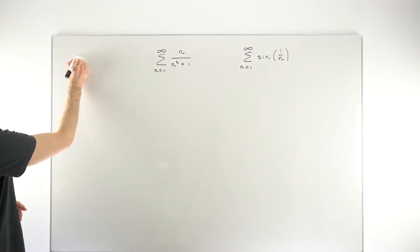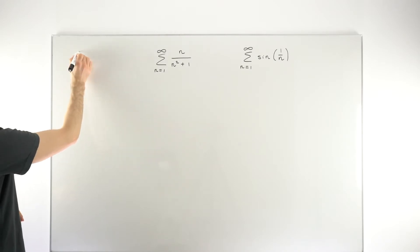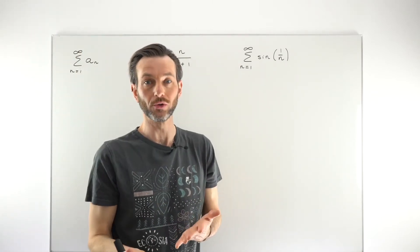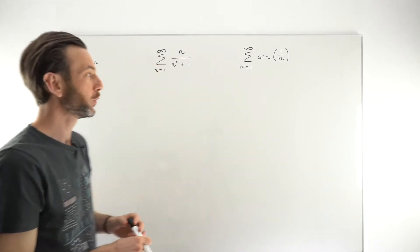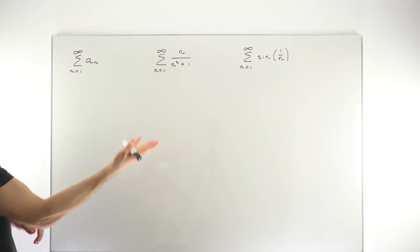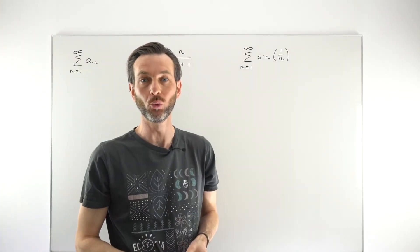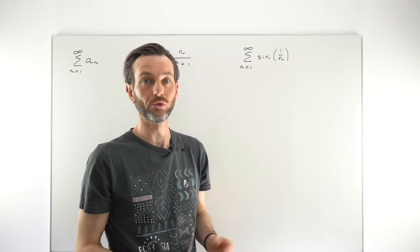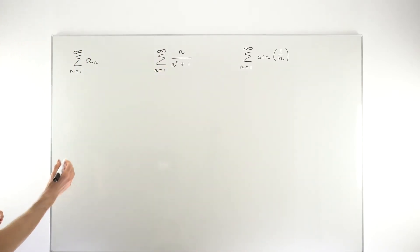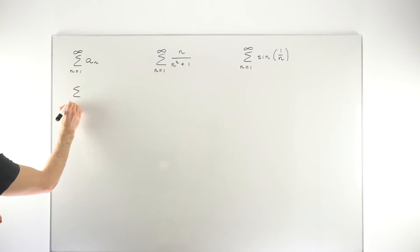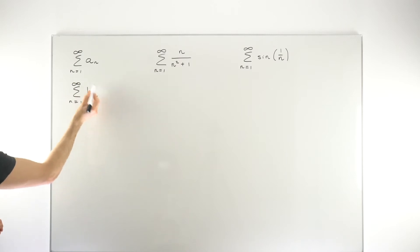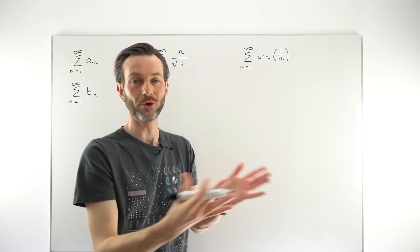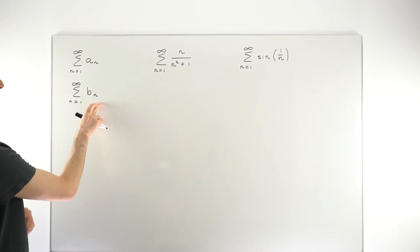If you're trying to determine whether an infinite series - say from n equals 1 to infinity of a_n - converges or diverges, one way to do that is by comparing it to another series. That other series has to be one that you already know whether it converges or diverges. So you choose a series b_n where you already know the convergence or divergence result.